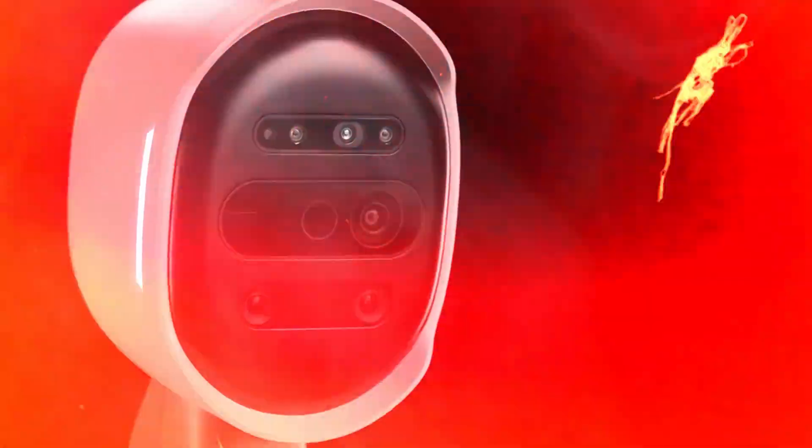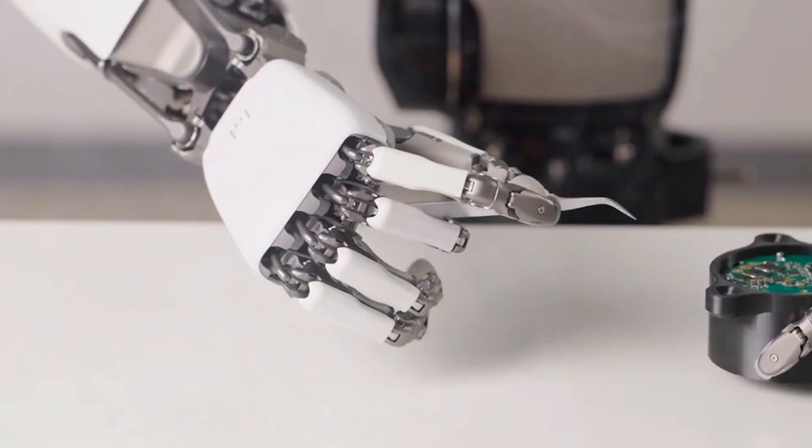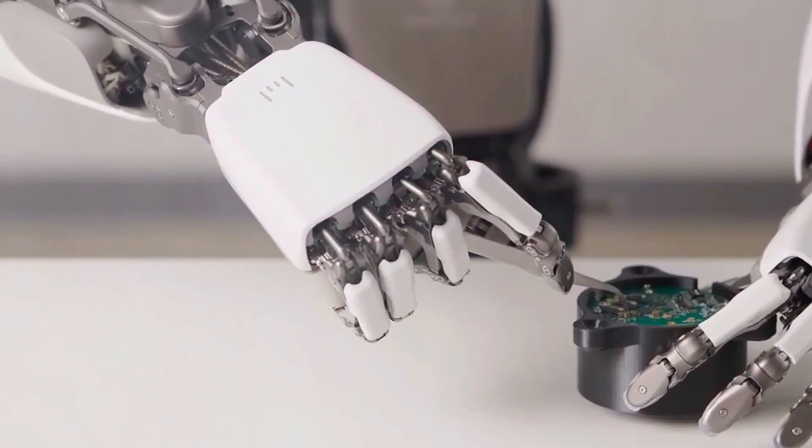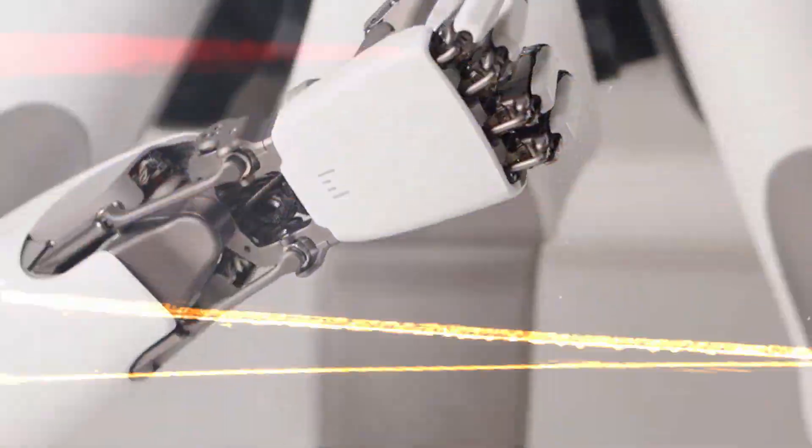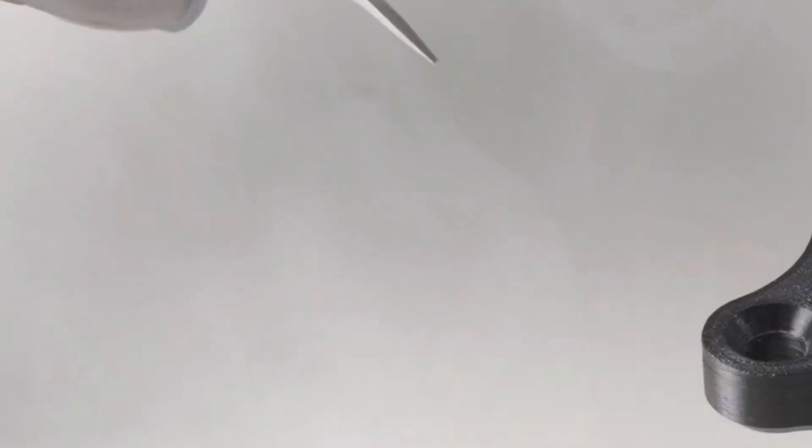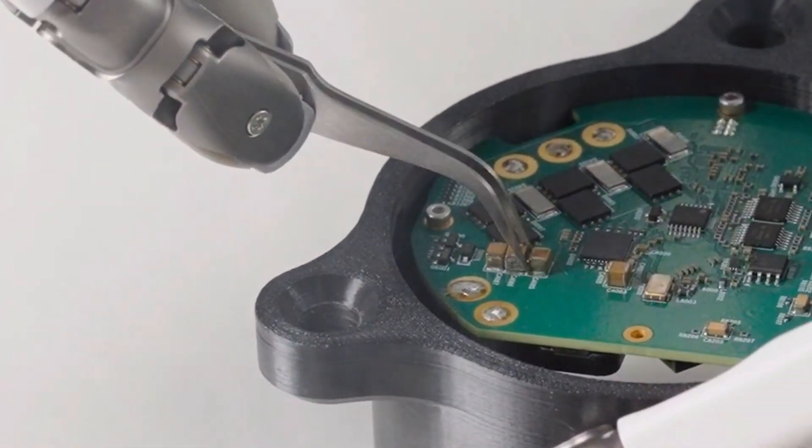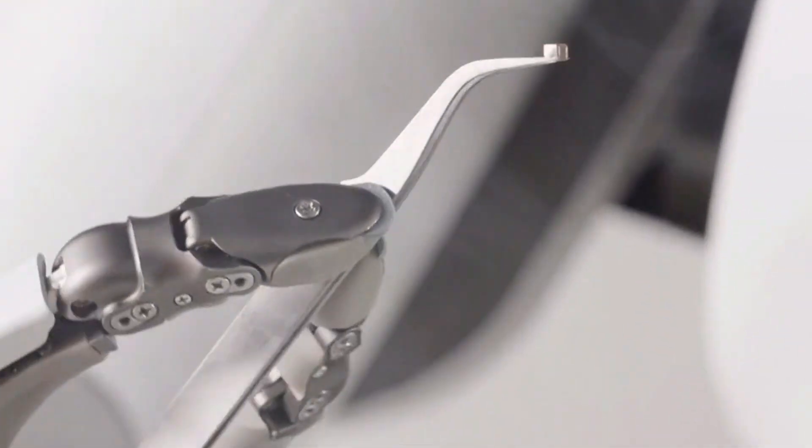But the real game changer is in its hands. Alex has the first back drivable, human-like robotic hand. 15 degrees of freedom, that's each finger moving independently like ours, plus enough strength to hold heavy tools, yet sensitive enough to pick up something fragile without crushing it. Think about what that means for health care, elder care, or even delicate manufacturing.